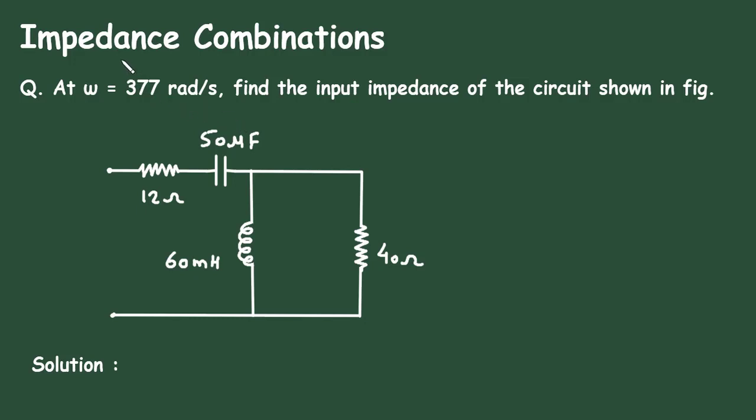In this video, we will see an example on impedance combinations. Question: at omega is equal to 377 radians per second, find the input impedance of the circuit shown in figure. For this circuit, we have to find its input impedance or total impedance of the circuit, where the value of omega is given.